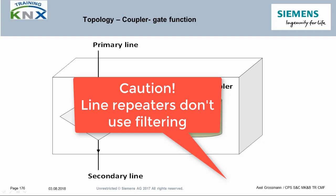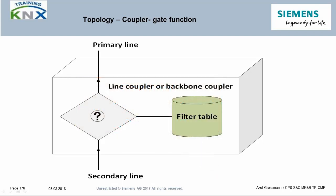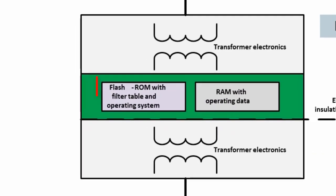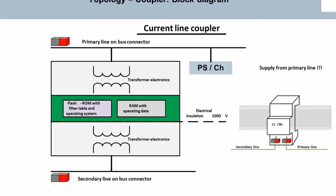Therefore, line repeaters always forward all bus telegrams unfiltered in both directions. This feature can cause problems when programming bus devices as well as during normal group telegram traffic, and should therefore only be used in special situations where the effects of the repeaters have been well investigated. The line couplers used today have a memory space in the flash ROM that holds the filter table. Since the flash ROM, like the EEPROM, is a non-volatile memory that can be overwritten frequently, this filter table is retained even when disconnected from the power supply.